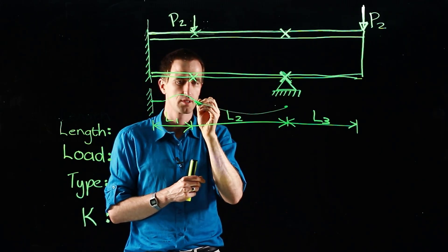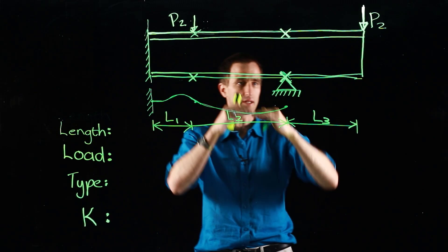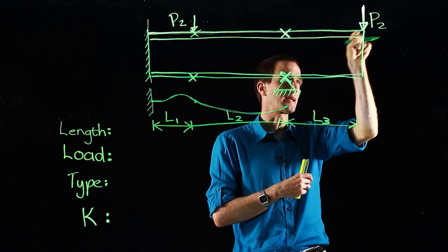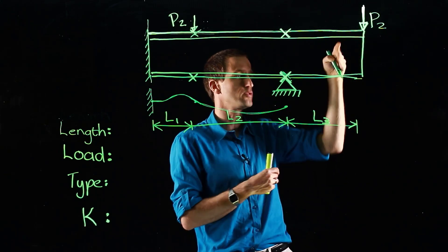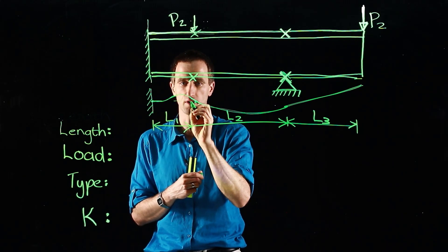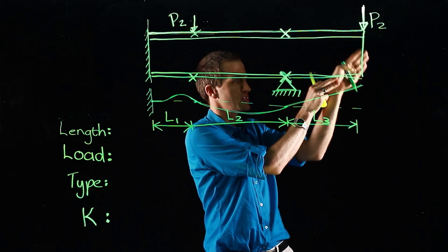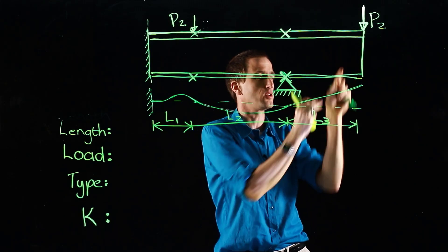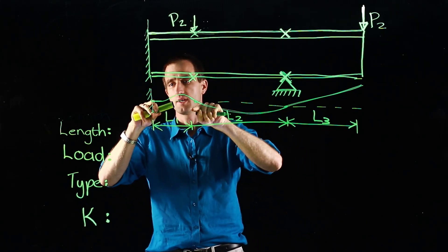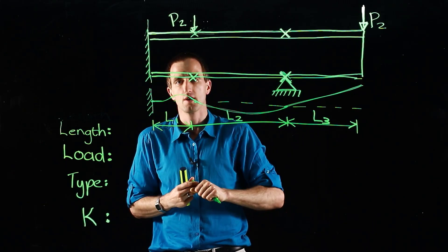We look at the compression flange — it can rotate at the lateral support, giving us our buckled shape for section L2. For the cantilever, nothing is preventing it from buckling sideways, so the whole section can just move and flop away as we load it, eventually kicking one way and folding out. At the lateral supports, it cannot move sideways and cannot rotate, so it behaves like fixed-pinned, pinned-pinned, and then pinned-free — thinking of it as a column.